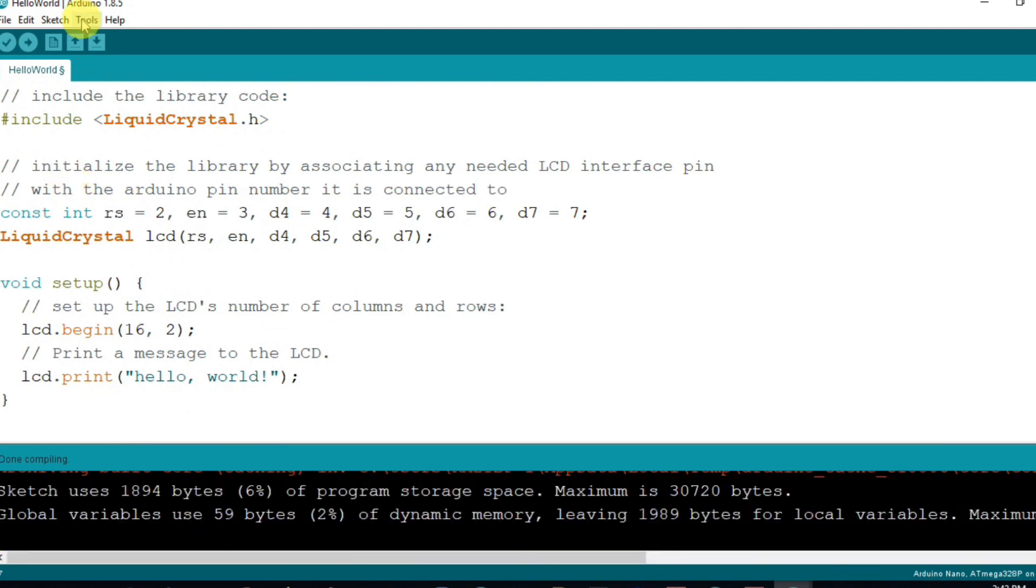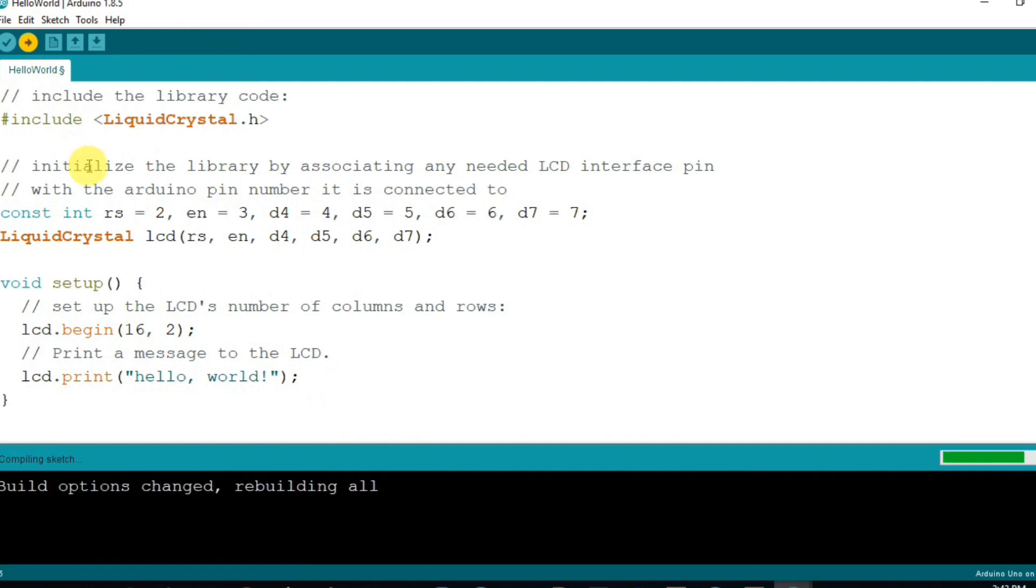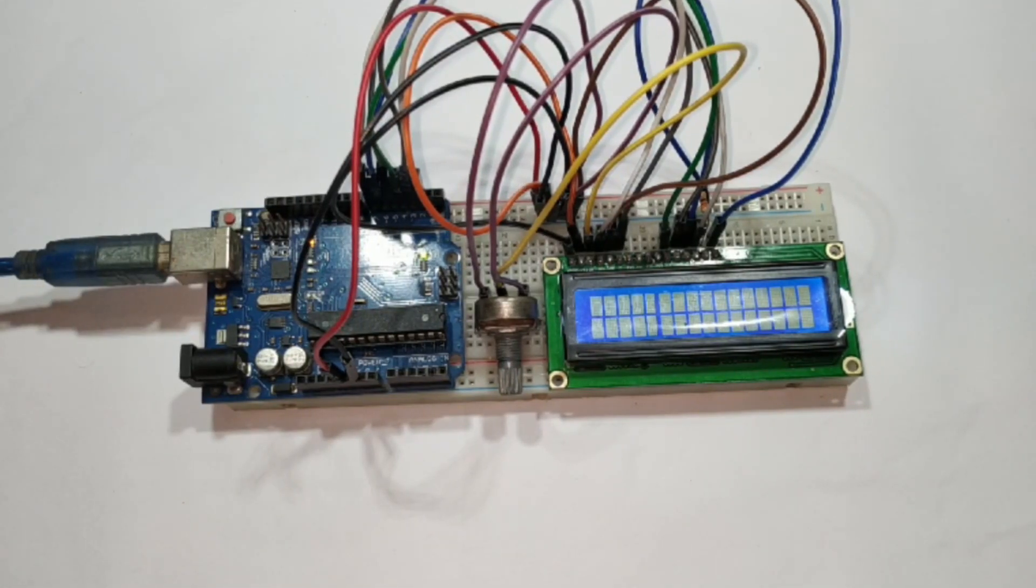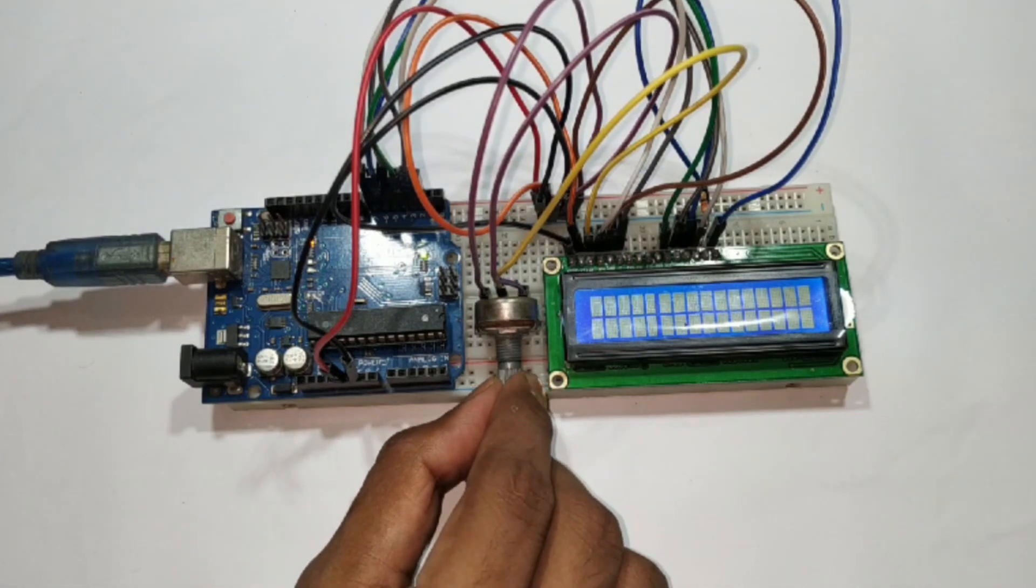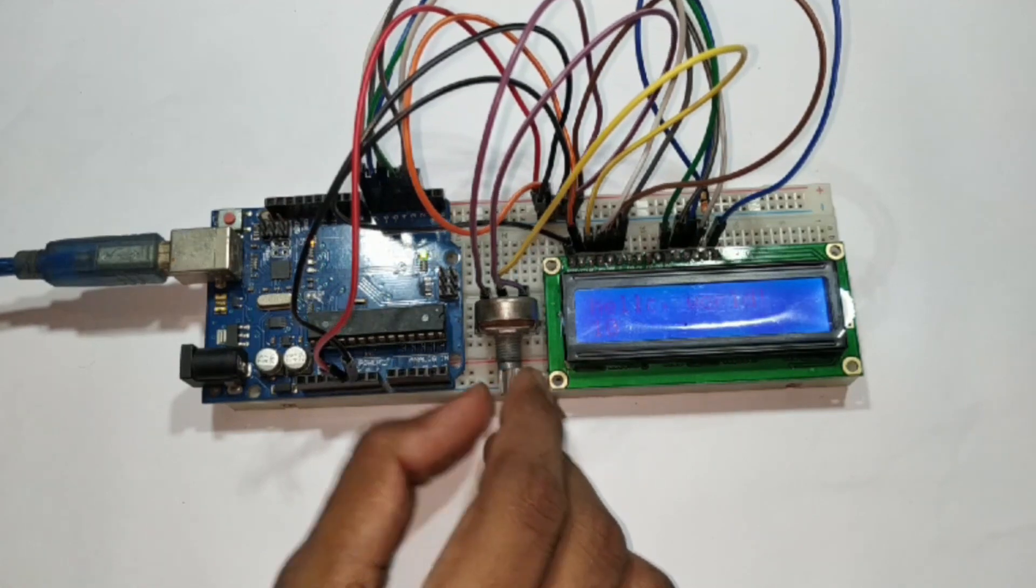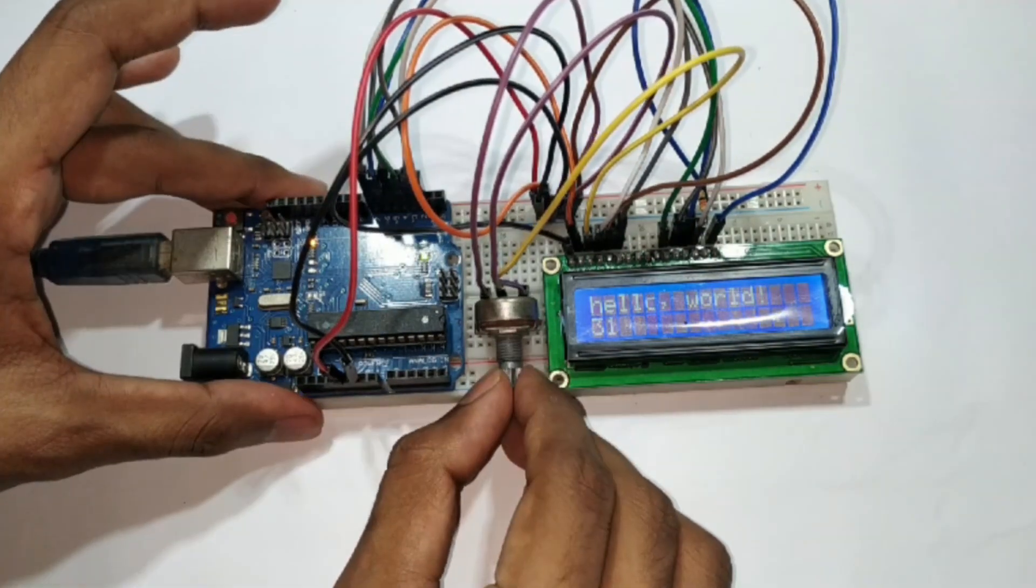Before uploading the code, please check the board and port option. After uploading the code, LCD display shows nothing. Don't worry about that, to fix this problem, need to adjust the LCD contrast using variable resistor.